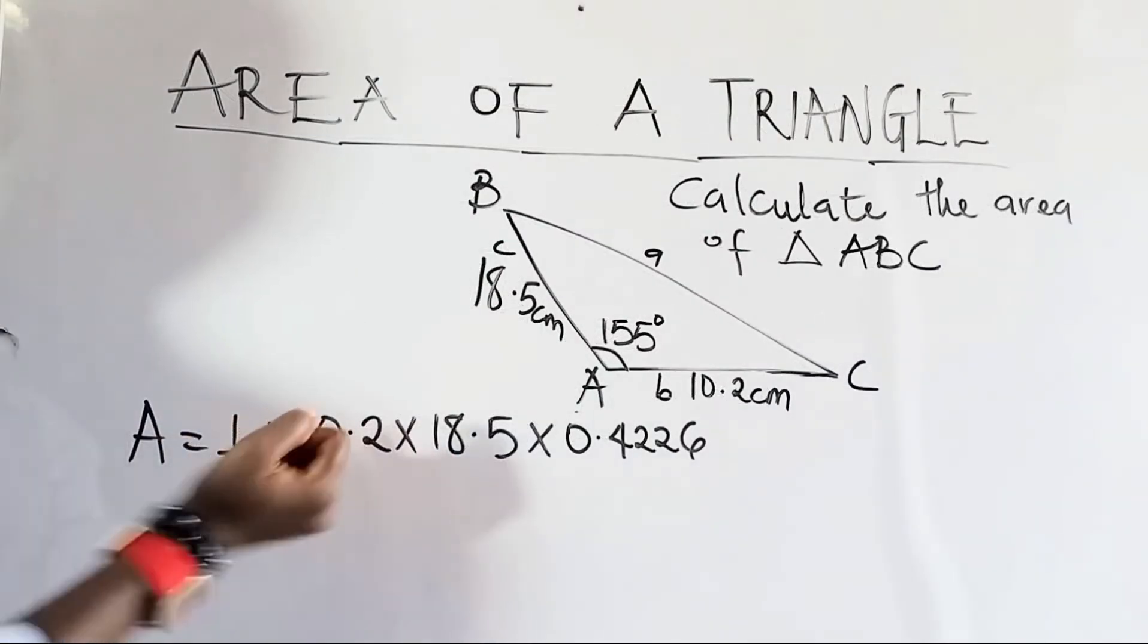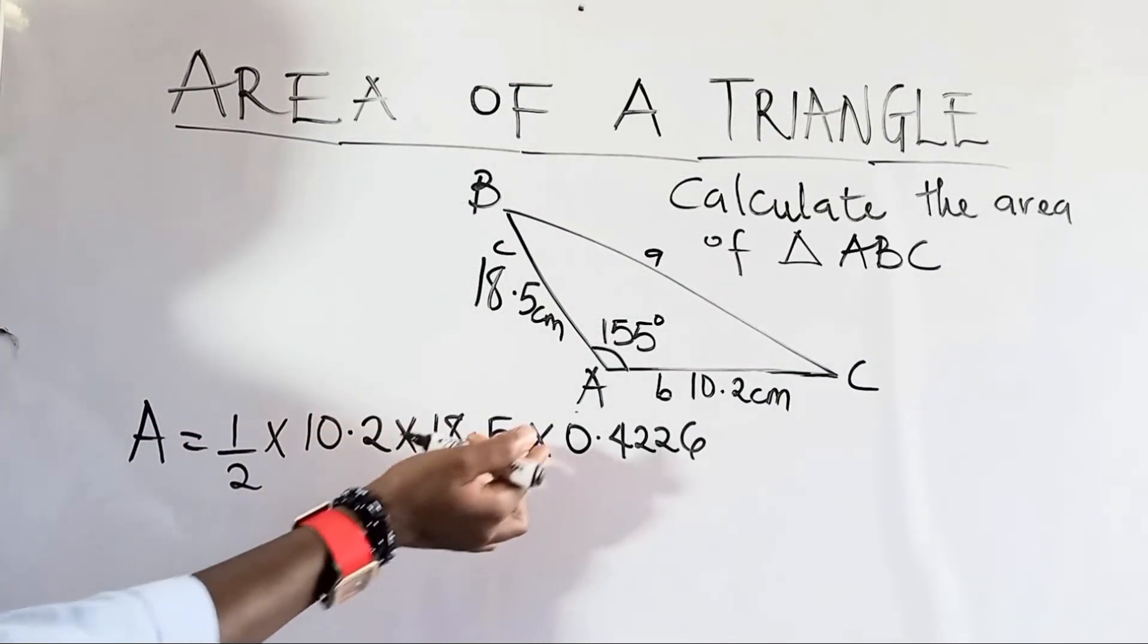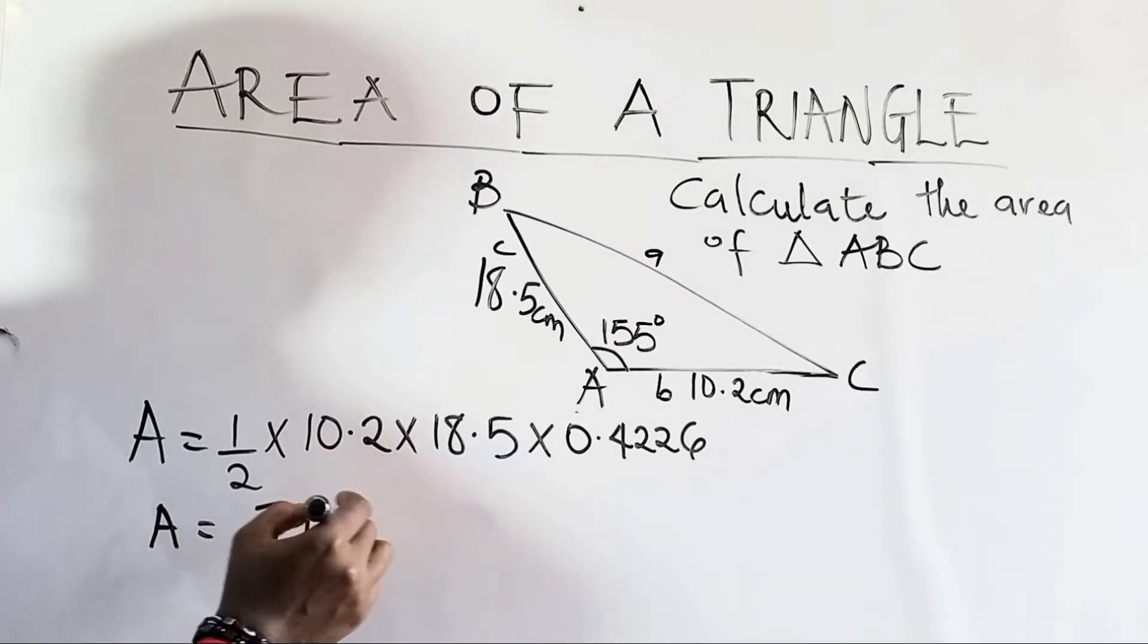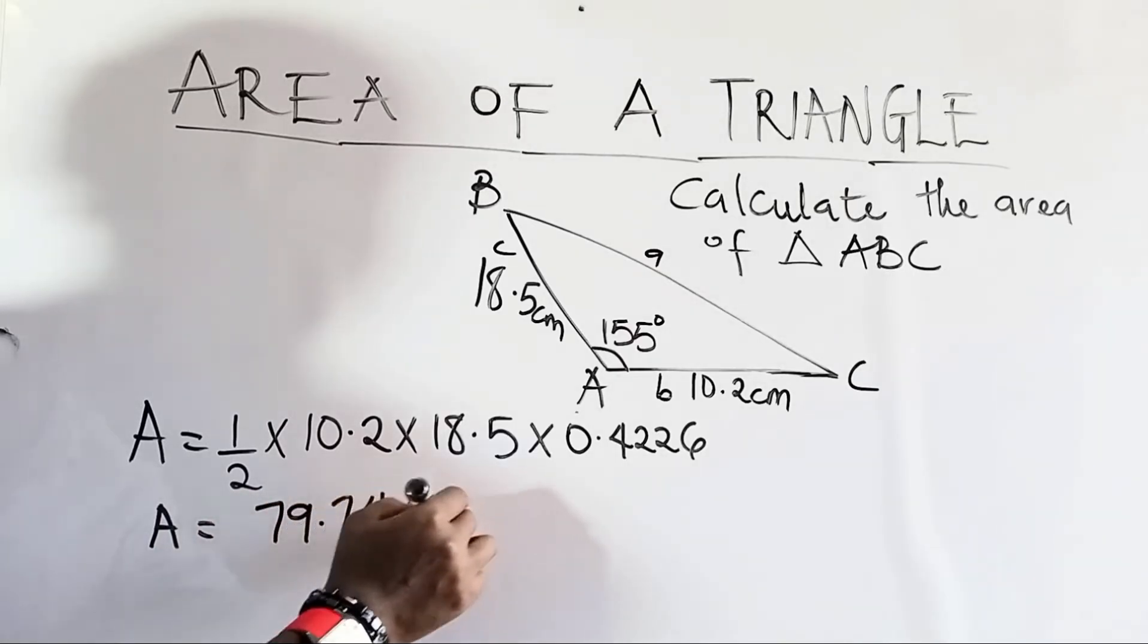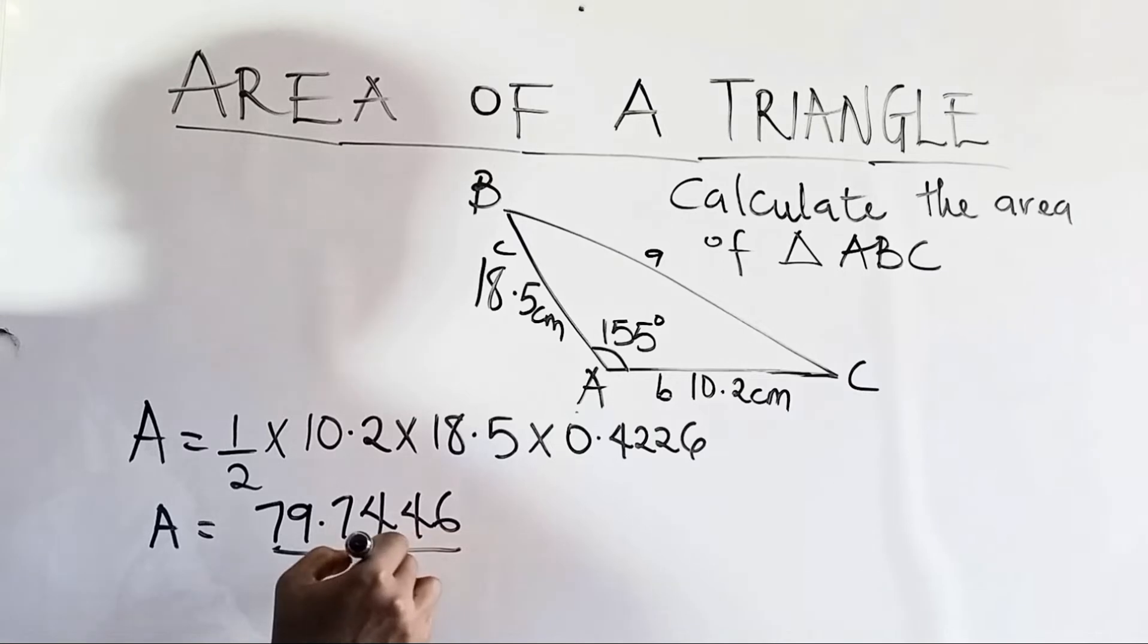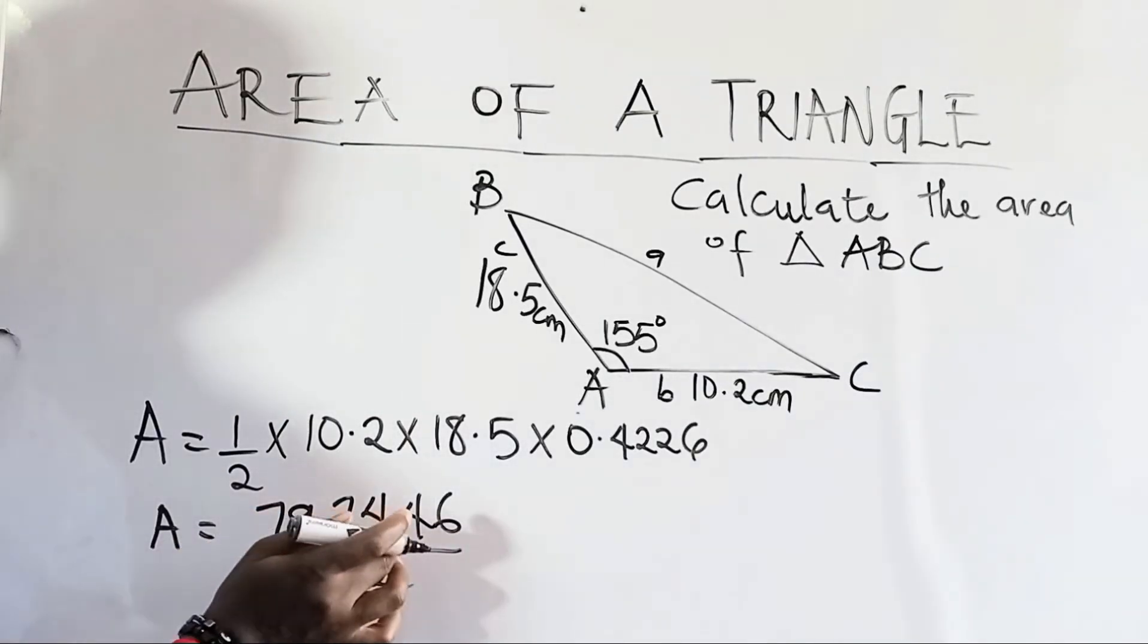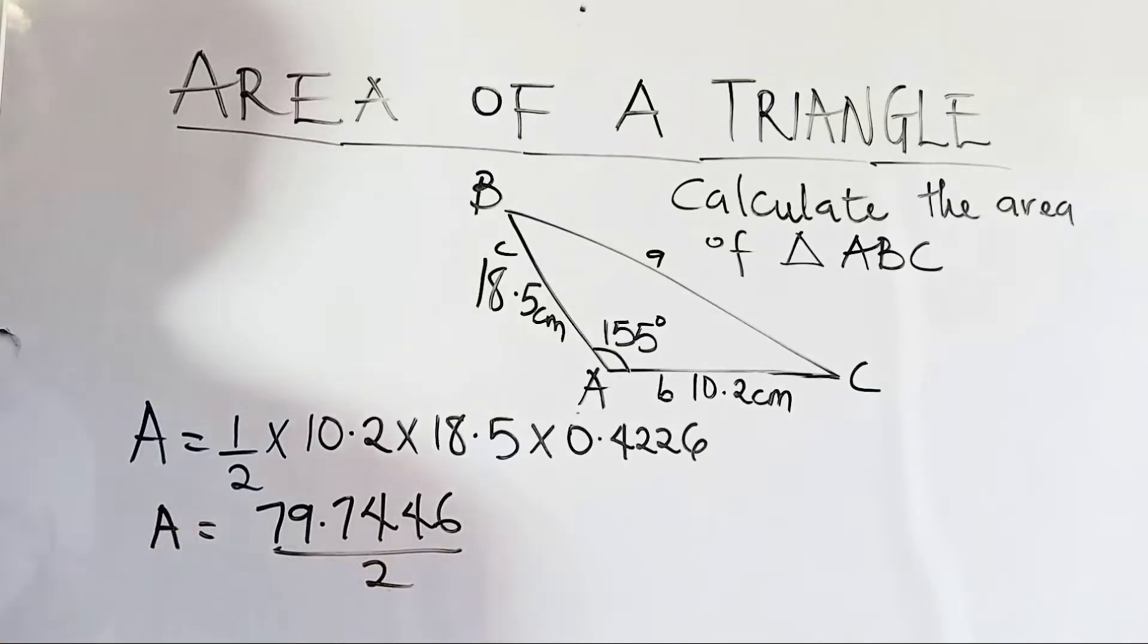So, 10.2 times 18.5 times 0.4226 would give us 79.7446 divided by 2. And if you divide 79.7446 by 2 and approximate to 2 decimal places, we have 39.87 cm² as the area of triangle ABC.